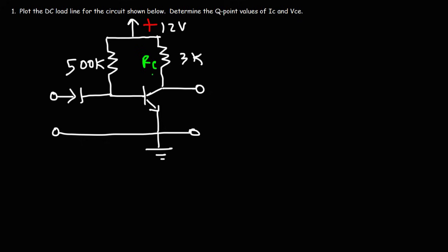RC is 3K. The base resistance is 500 kΩ. This is the base of the NPN transistor, that's the collector, and this is the emitter.